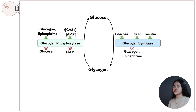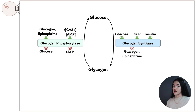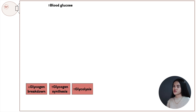To summarize, glycogen synthase is activated by glucose, glucose 6-phosphate, and insulin. Now let's zoom out and look at how carbohydrate metabolism is regulated in high and low blood glucose states, focusing on the liver — because there are some differences in metabolic regulation between skeletal muscle and liver.